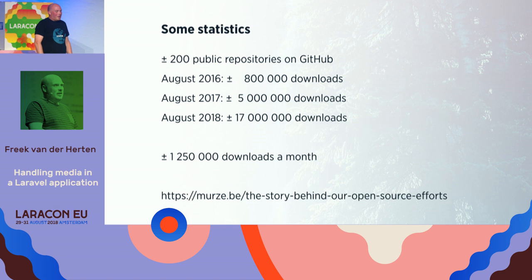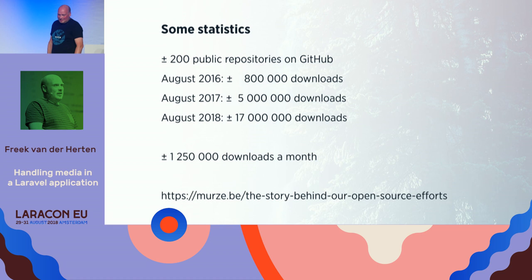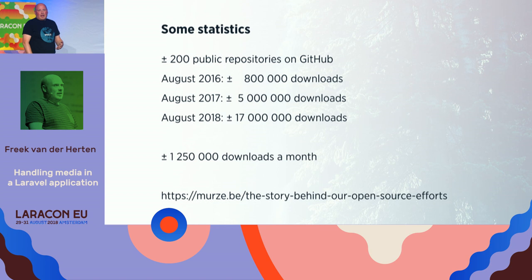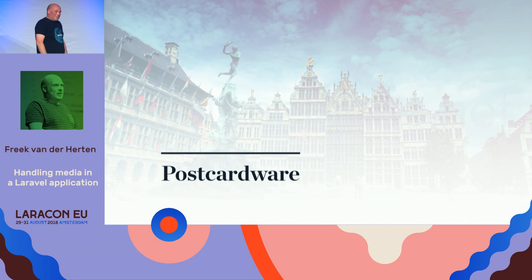Here are some statistics on our open source effort. We now have about 200 public repositories on GitHub. In 2016 we had 800,000 downloads, then in 2017, 5 million. And right now we have 17 million downloads of our packages, being downloaded about 1,250,000 times a month — which, keeping in mind that Spatie is only a very small company, we are very happy with those numbers. For those interested in why we started and how we do this, I wrote a blog article about that.